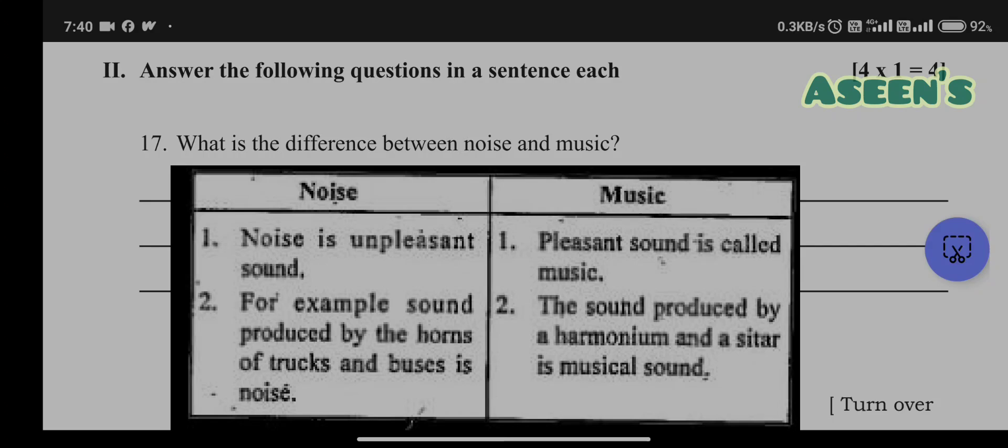While writing the differences you need to take care that you are dividing your page into two parts and writing it as shown in the figure, not like a paragraph. Noise is unpleasant sound whereas music is pleasant sound. Examples for noise: horns of trucks, buses, etc. For music: harmonium, sitar, etc.